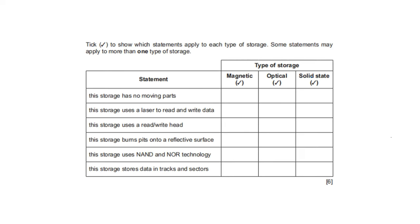Check to show which statements apply to each type of storage; some statements may apply to more than one type. The first statement: this storage has no moving parts — that is SSD or solid state. This storage uses a laser to read and write data — that is optical storage.